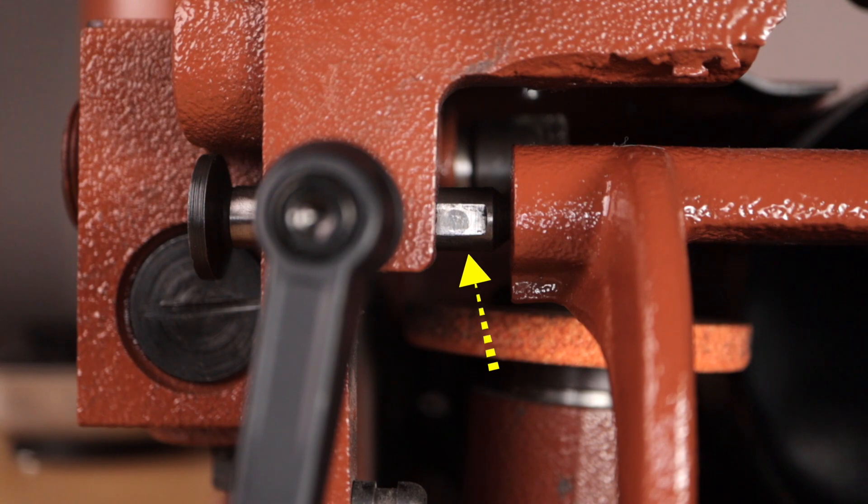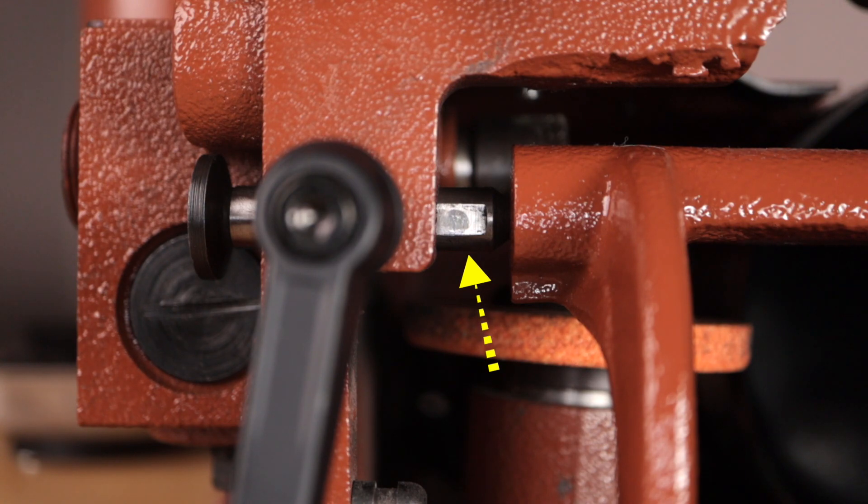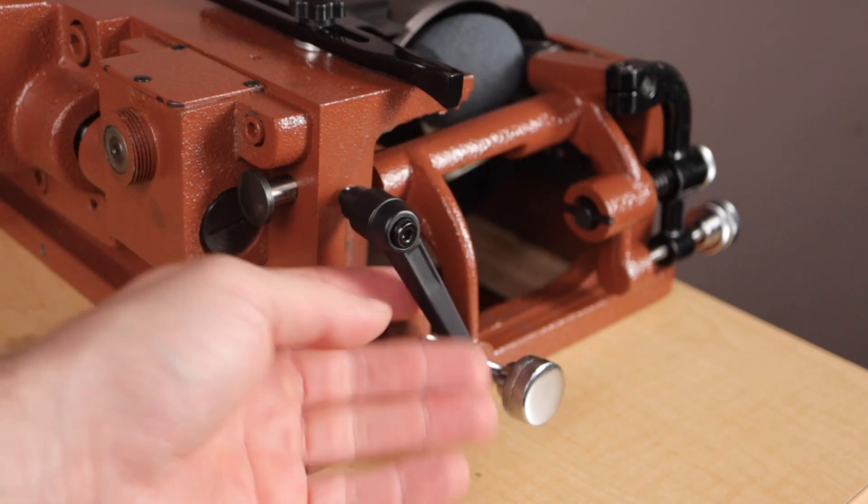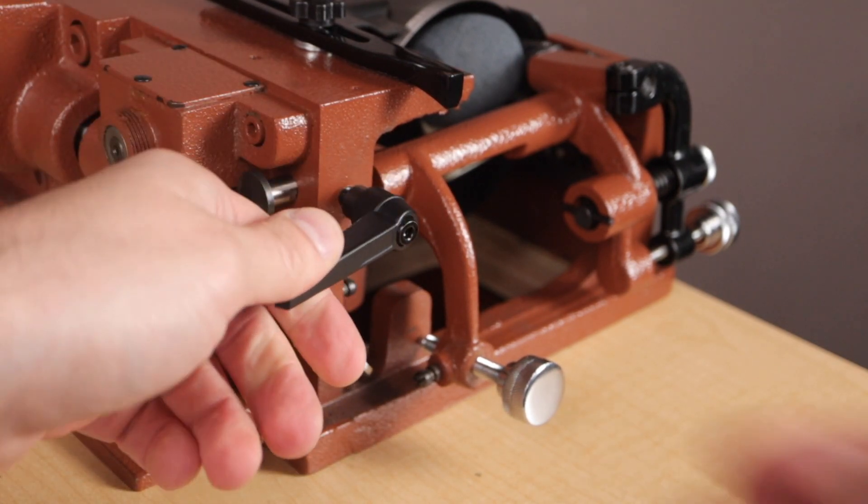This roller bracket center arm pin has a flat side and that should be facing outwards because this allows the center pin screw to lock it in place.